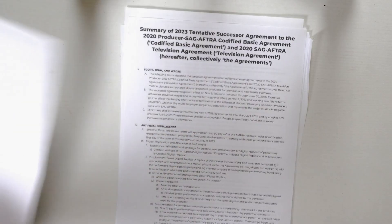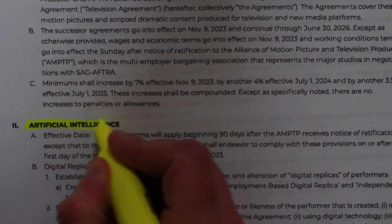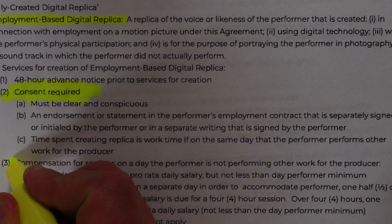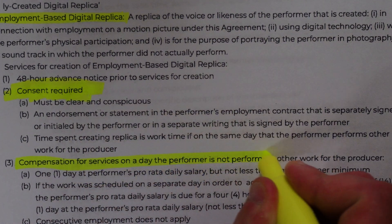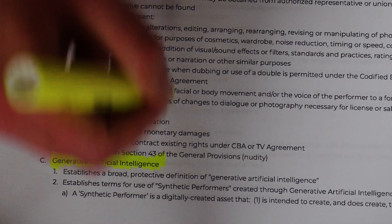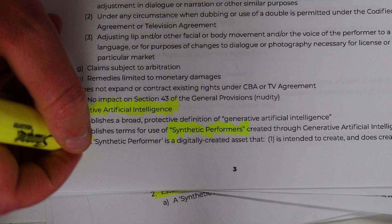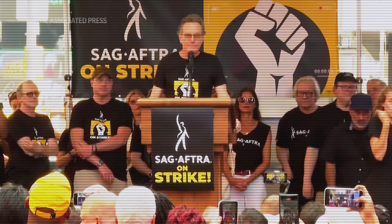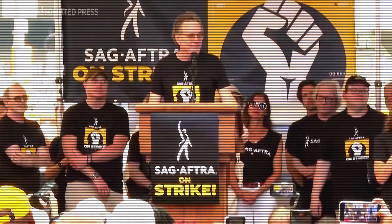Actually, it's a bit more complicated than that. The latest agreement states that digital actors are technically okay, but only if studios get consent from the actors. The actors would also get paid for the days their digital doubles are used, as well as residuals afterwards. These rules also apply to dead actors, completely synthetic performers, and if facial features resemble an actor's likeness — they all need to be given consent and paid. But Justine Bateman, who is an AI advisor on the SAG negotiations, seems to think otherwise.